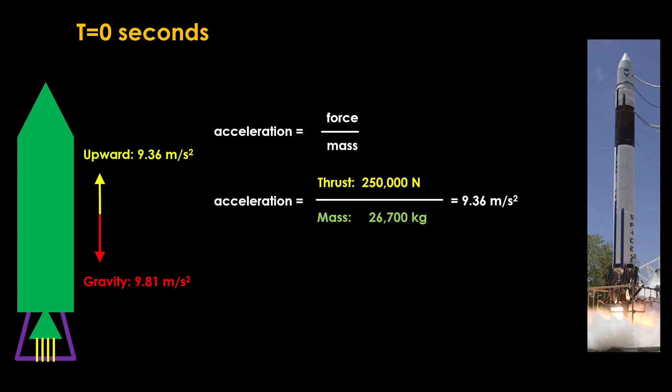9.36 is less than 9.81, so gravity is pushing down harder than the engine is pushing up and nothing happens. The first rule is that the upwards acceleration from the engine must be more than the downward acceleration from gravity to get off the launch pad.